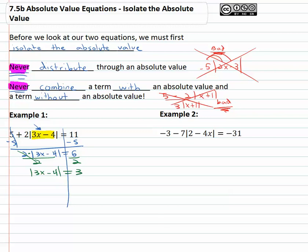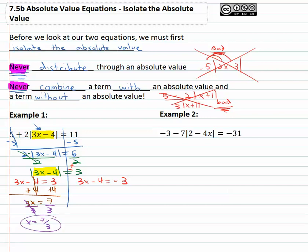Now that we have the absolute value alone, we're ready to solve by saying what's inside the absolute value could be positive or negative three. So three x minus four equals positive three, and three x minus four equals negative three. Now I have two two-step equations we can quickly solve. Adding four to both sides gives us three x equals seven, and then dividing by three gives our first answer: x equals seven-thirds. Similarly, adding four to both sides on the second equation gives us three x equals one, and dividing by three gives x equals one-third. We have two solutions for x: seven-thirds and one-third.